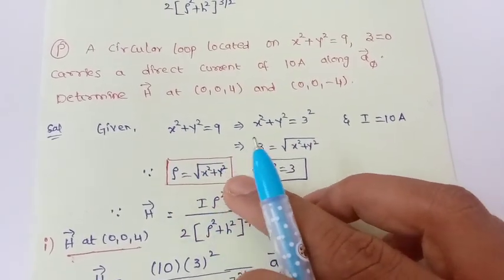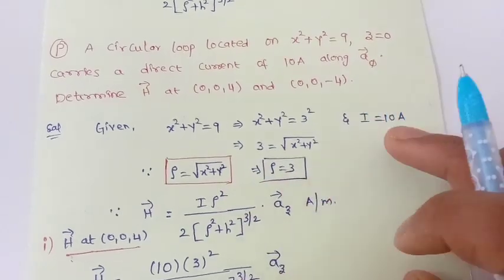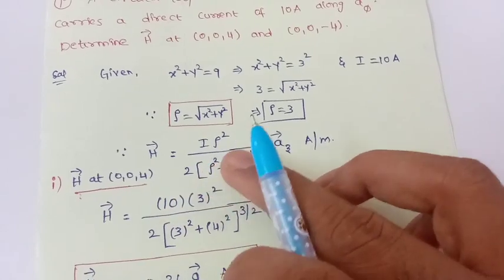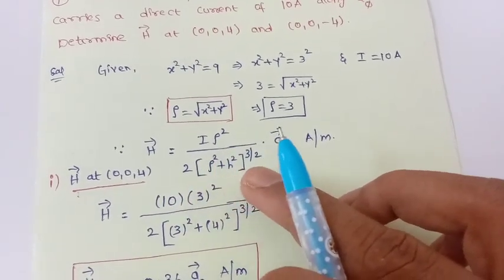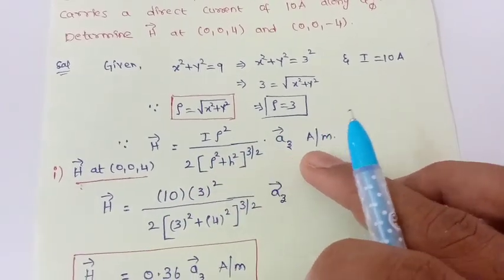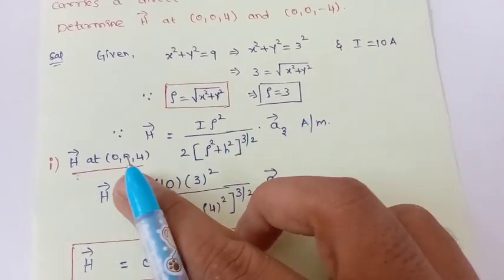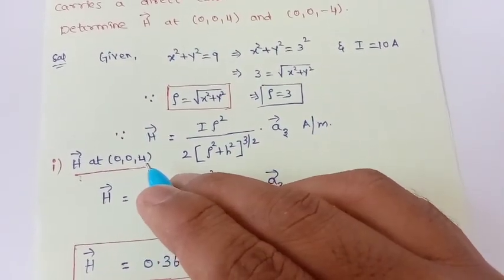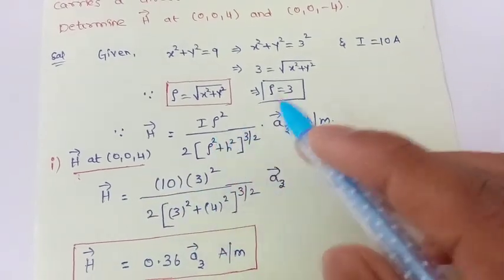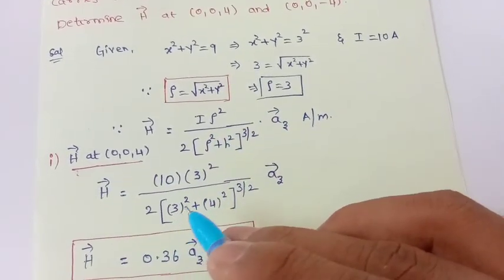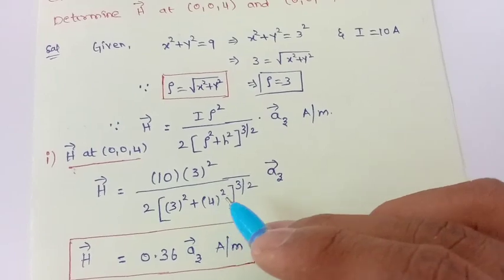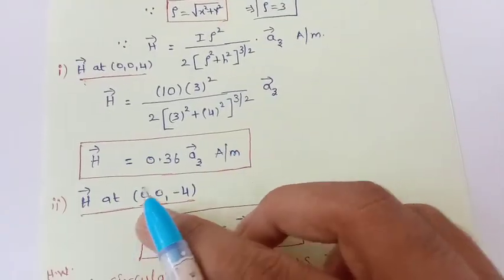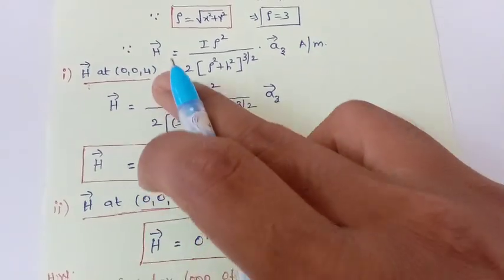From x² + y² = 9 = 3², we get ρ = √(x² + y²) = 3. The given current is 10 amperes. H⃗ = Iρ²/[2(ρ² + h²)^(3/2)] ẑ amperes per meter. The point is (0, 0, 4), so h = 4. Substituting: H = 10 × 3² / [2 × (3² + 4²)^(3/2)]. After substitution, we get the result.